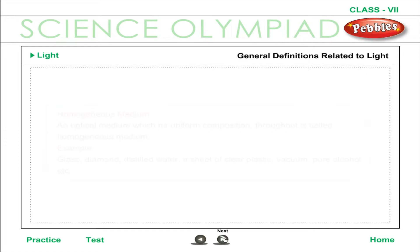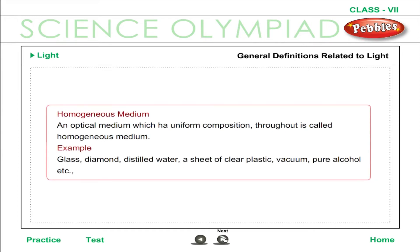Homogeneous medium: an optical medium which has uniform composition throughout is called a homogeneous medium. Examples include glass, diamond, distilled water, a sheet of clear plastic, vacuum, and pure alcohol.